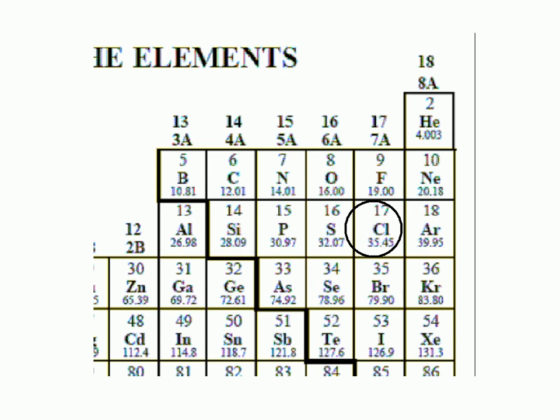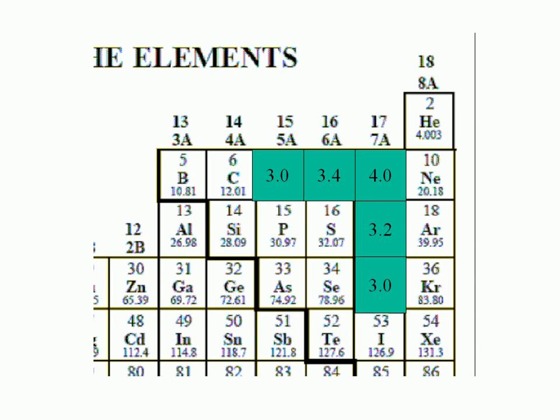The most electronegative element is fluorine with a value of 4.0 on the Pauling scale. Fluorine is followed by oxygen with 3.4. Next is chlorine with 3.2. Then nitrogen and bromine have 3.0. And iodine follows with 2.7.